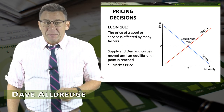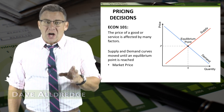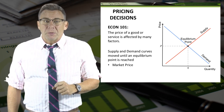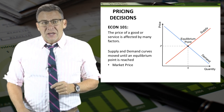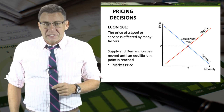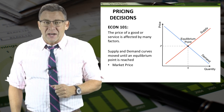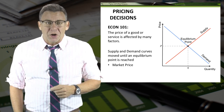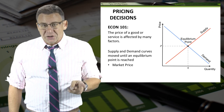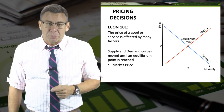We've spent a lot of time in managerial accounting talking about costs, so let's switch our focus for a moment to price. There are a number of factors that affect a product's price, but the basics of pricing comes from Econ 101: supply curves and demand curves intersect at the market price of a product.